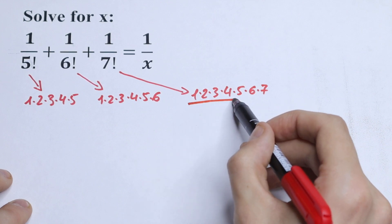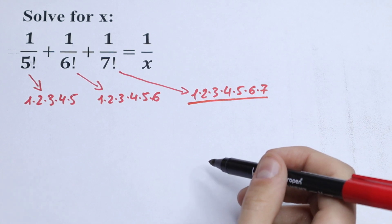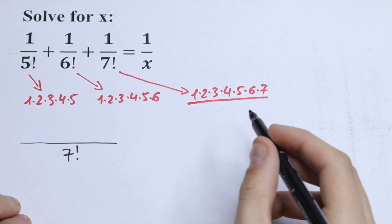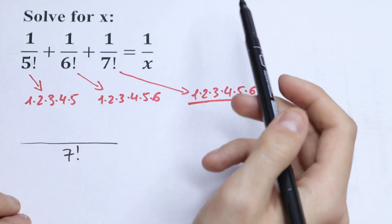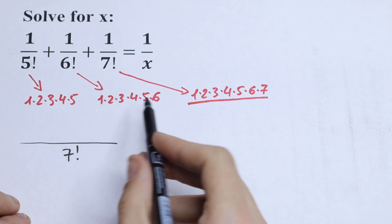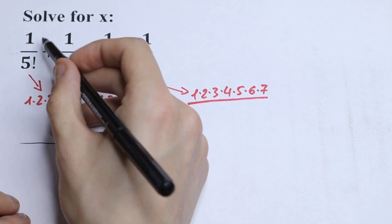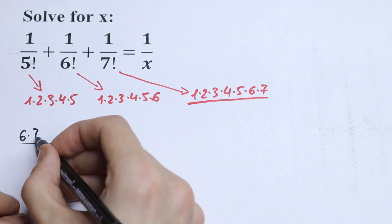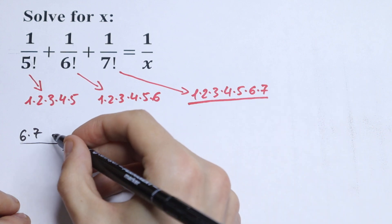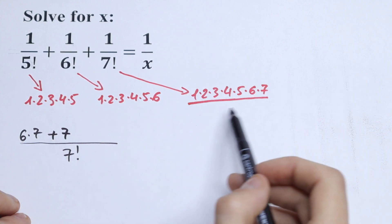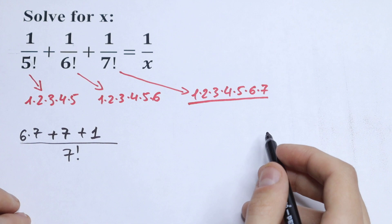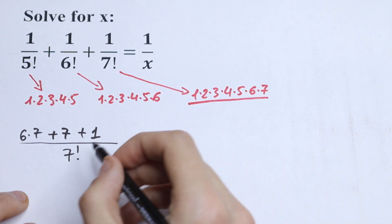Our common denominator will be 7 factorial, so let's write this fraction. We will have 7 factorial in our denominator. What will we have near the 5 factorial term? We will have 6 times 7, because we don't have this 6 times 7 there, so we need to write 6 times 7 in this fraction. What will we have near the 6 factorial term? We need to have 7, so plus 7. And since 7 factorial already covers all those products, we write plus 1.